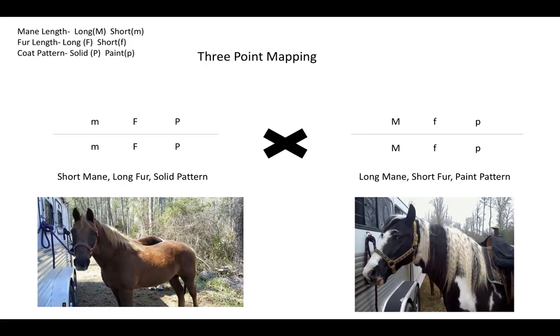Now let's look at the lower right. This is Smokey. He's long mane, short fur, paint pattern horse with a genotype of capital M, lowercase f, lowercase p.